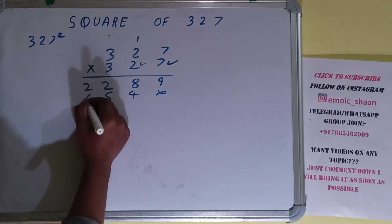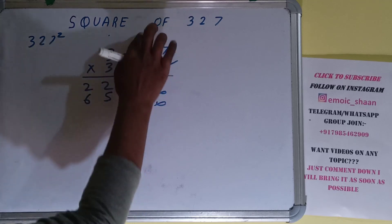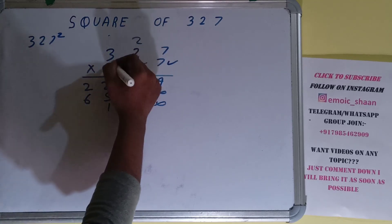And 2 times 3 is 6. Now this 3 times 7, 3 times 7 is 21. 2 carry. 3 times 2 is 6 plus 2 is 8.